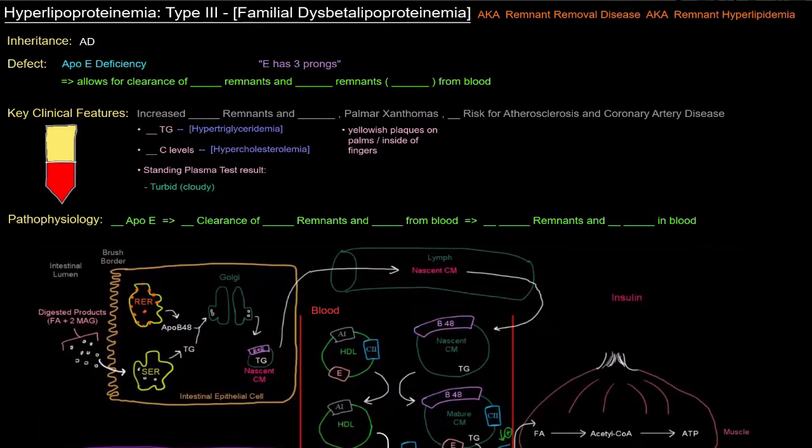Here we are with Type 3 hyperlipoproteinemia, or familial dysbeta lipoproteinemia, also known as remnant removal disease or remnant hyperlipidemia. This is an autosomal dominant deficiency of apoprotein E.